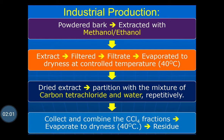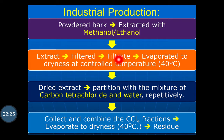Industrial Production: Powdered bark is used for industrial production. The powdered bark is extracted with Methanol or Ethanol. The extract which is obtained is filtered, and the filtrate is evaporated to dryness at a controlled temperature of 40 degrees Celsius, to obtain the residue of the extract.